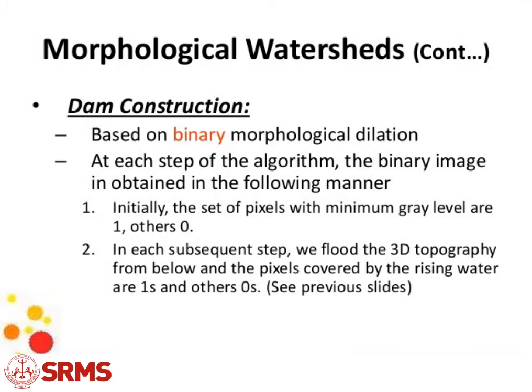If you are unfamiliar with watershed, please refer to Part 3 of Unit 4. For morphological operations, see Part 2 of Unit 4. Based on binary morphological dilation, at each step of the algorithm the binary image is obtained as follows: initially, the set of pixels with minimum gray level are set to 1 and others to 0. In each subsequent step we flood the 3D topography, and pixels covered by the rising water are 1, others 0.